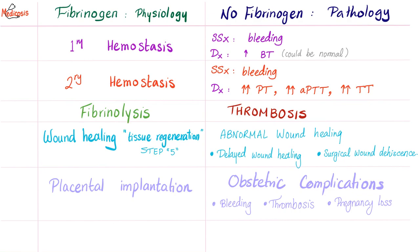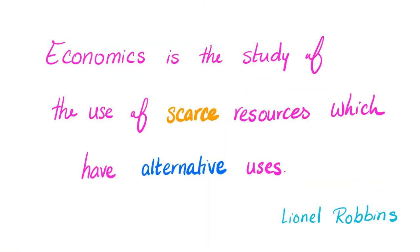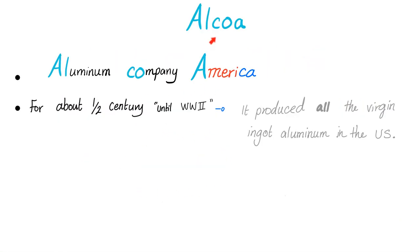How can fibrinogen be pro-hemostasis and pro-fibrinolysis at the same time? Isn't that oxymoronic? The answer is actually in economics — economics is the study of the use of scarce resources which have alternative uses. To illustrate this point, consider Alcoa, the Aluminum Company of America.